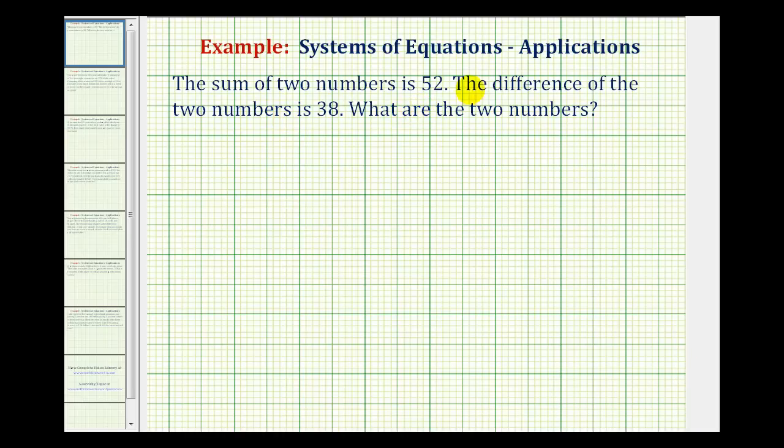The sum of two numbers is fifty-two. The difference of the two numbers is thirty-eight. What are the two numbers?